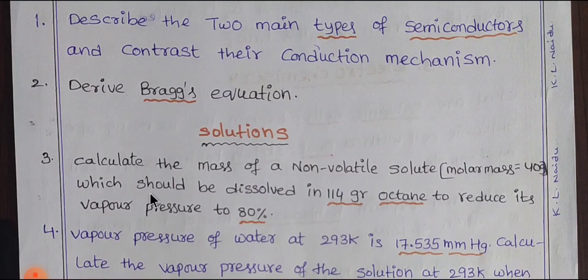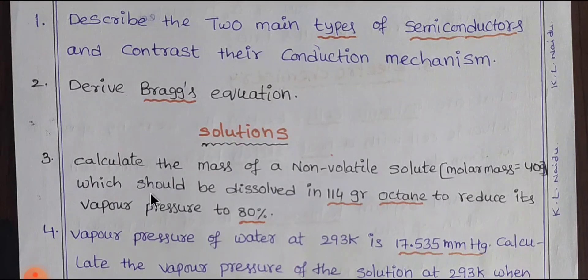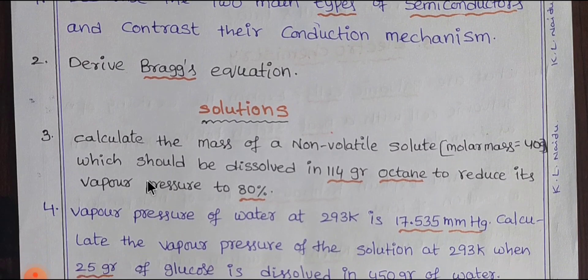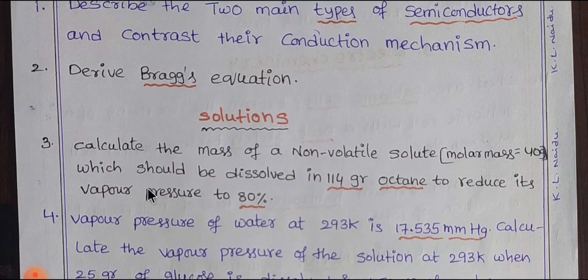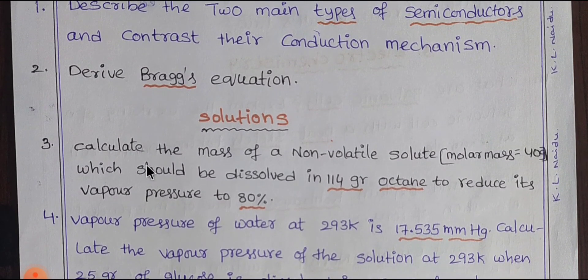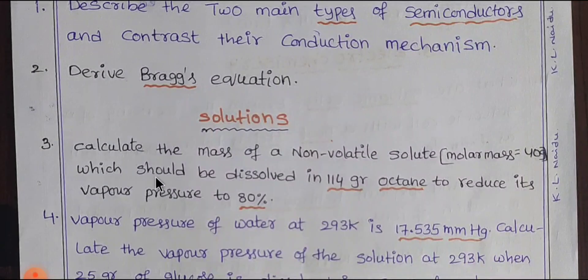You will need to calculate the mass of non-volatile solute, and calculate the remaining details including vapor pressure. You will need to use the formula: P0 minus PS divided by P0 equals W1 divided by M1, multiplied by M2 divided by W.